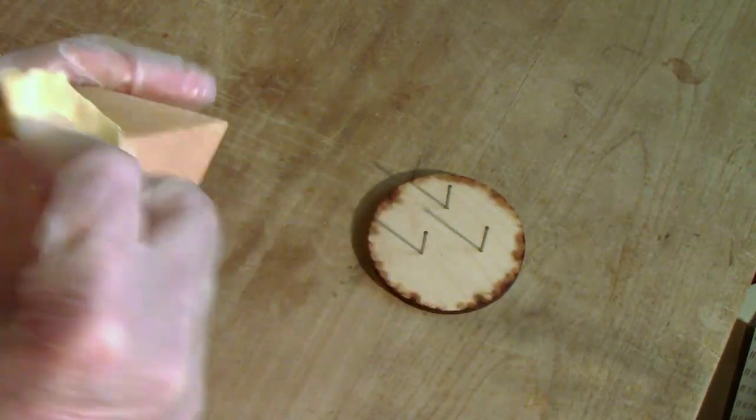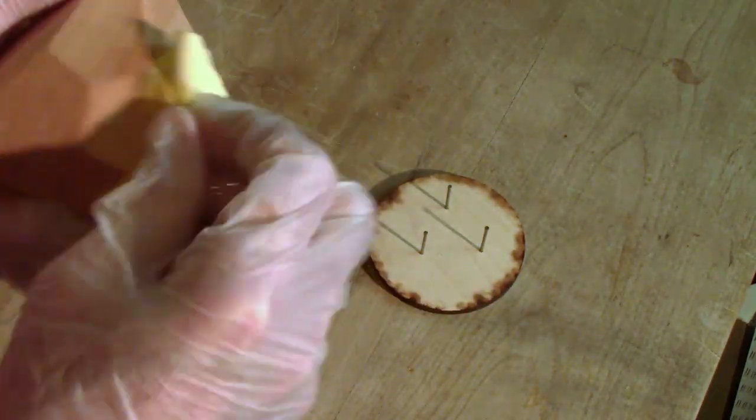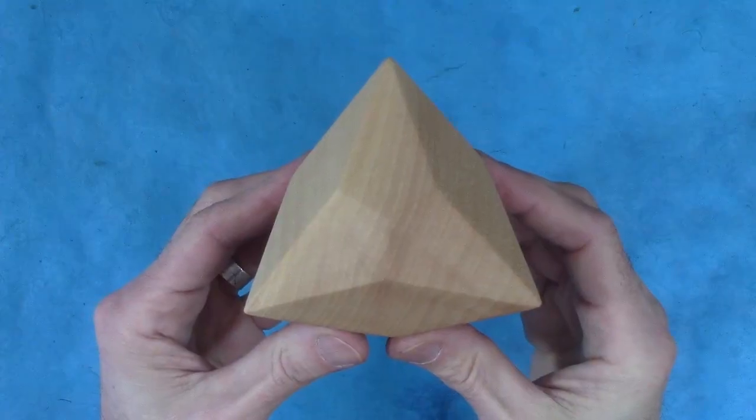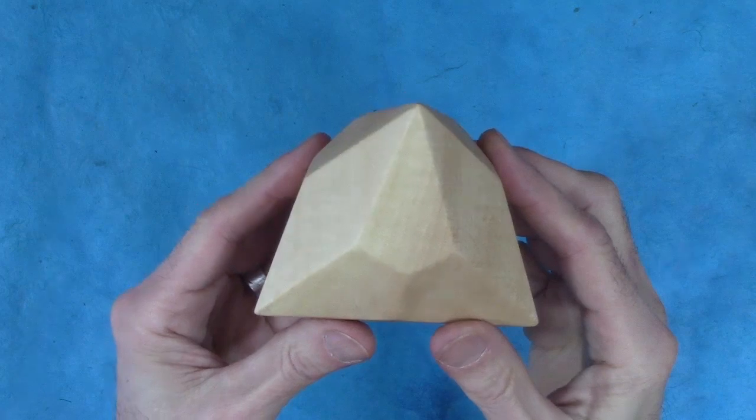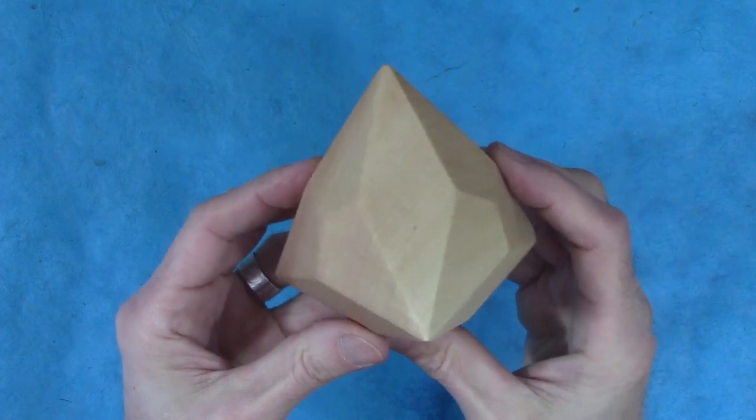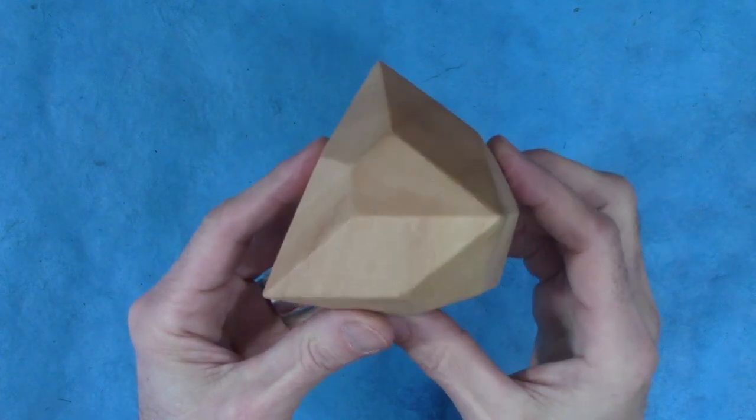Then a coat of tongue oil gives it a simple finish, appropriate for something made in the 1600s. It really is a beautifully tactile object to hold. Very solid. Very elegant. It's fun to turn it all around in your hands and study it different ways.